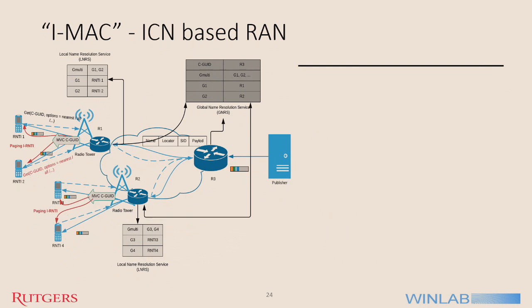How is the LNRS table initially populated? After every attach process, we assume the UE gives its GUID to the eNodeB. After every RRC connection, a unique RNTI is assigned to that particular UE. Knowing the GUID and RNTI, the eNodeB fills in the entries in the local name resolution table. When data is pushed from publisher to eNodeB — handled by the ICN core network — the control part of the eNodeB decapsulates the packet, checks the GUID, gets the corresponding requesting RNTI, and starts creation of the data radio bearer.